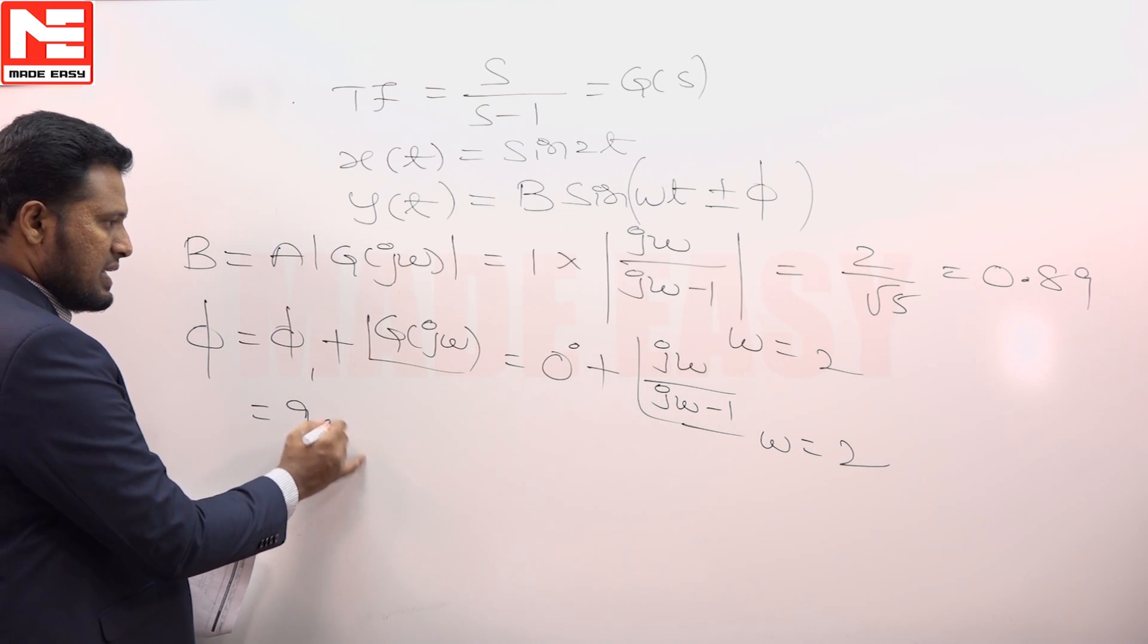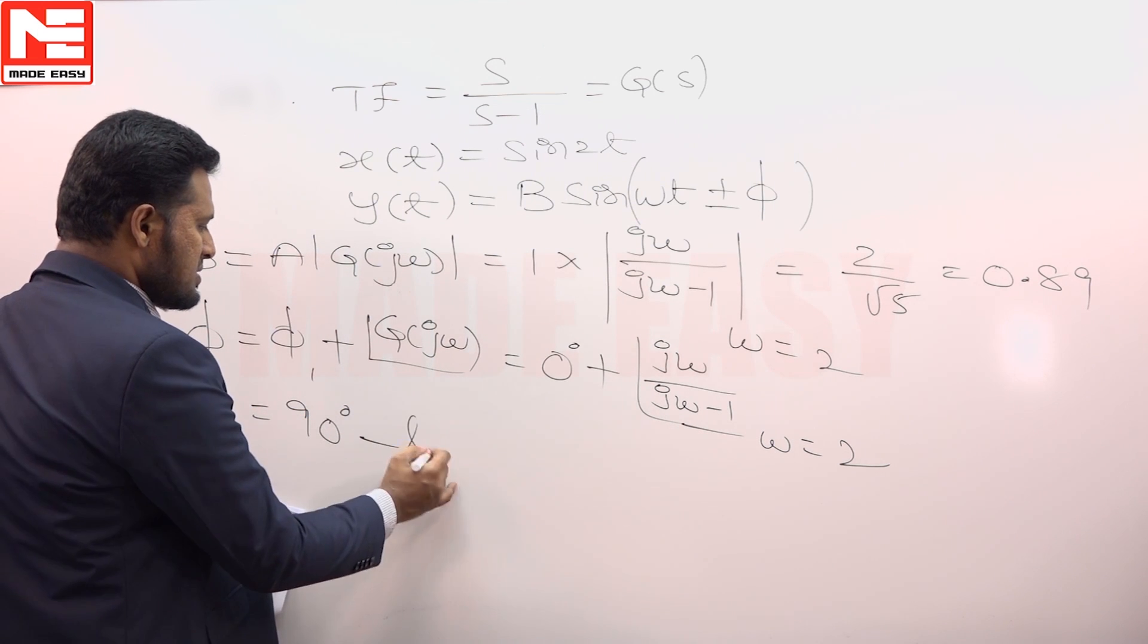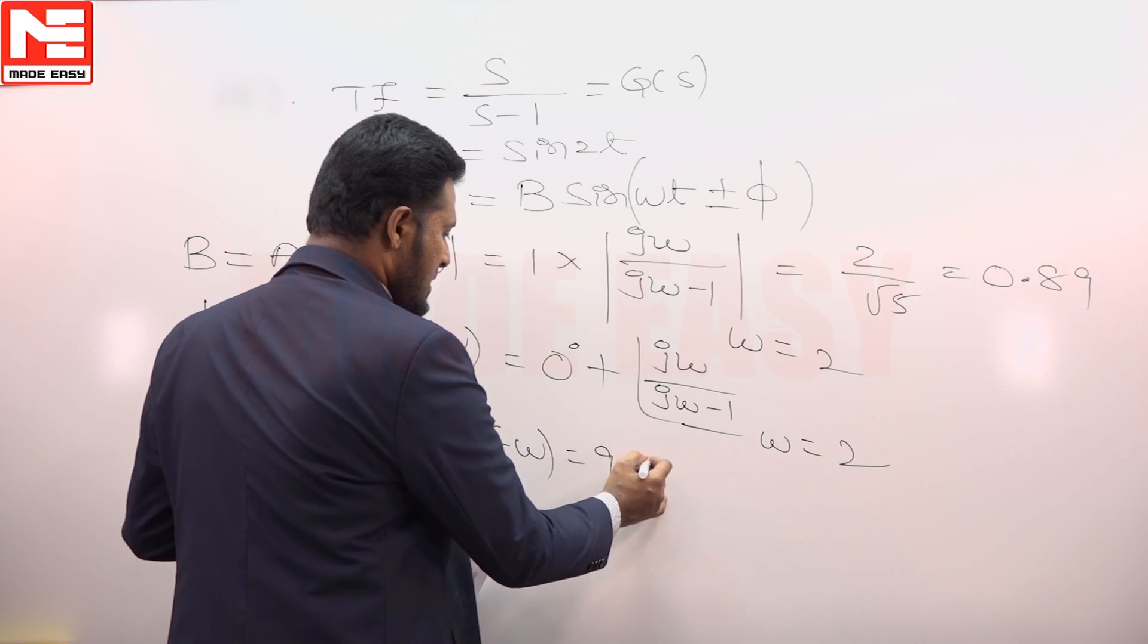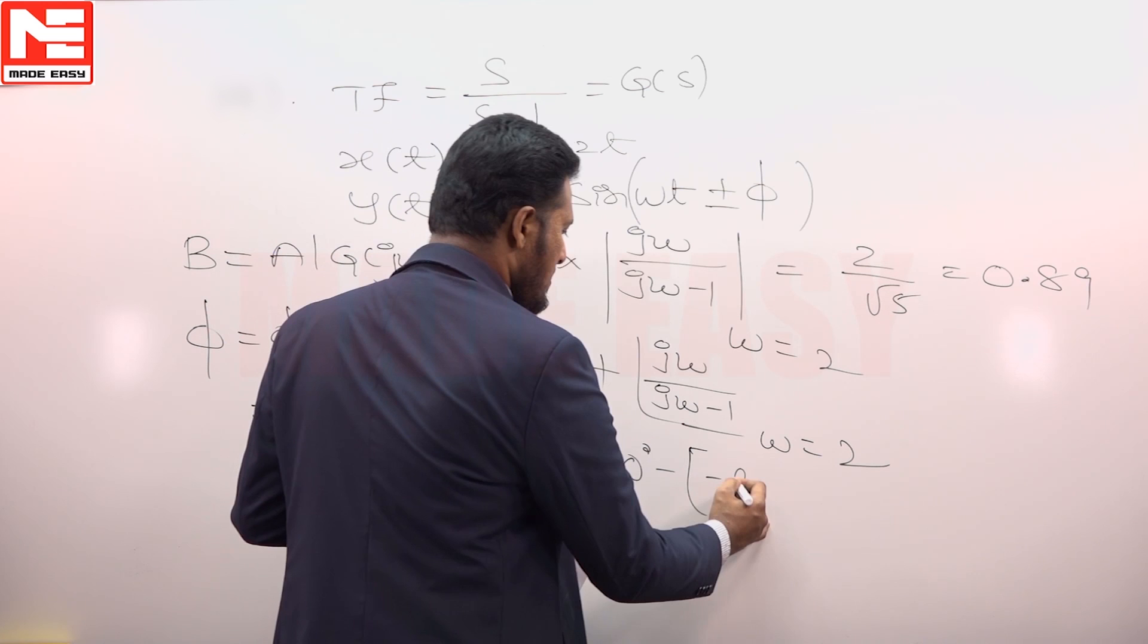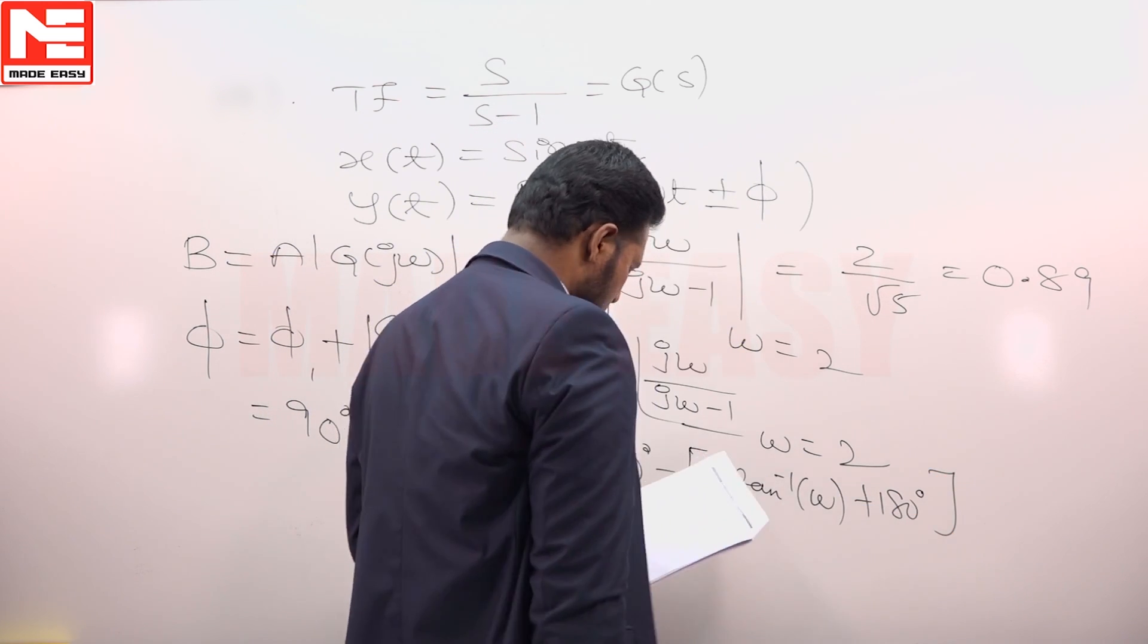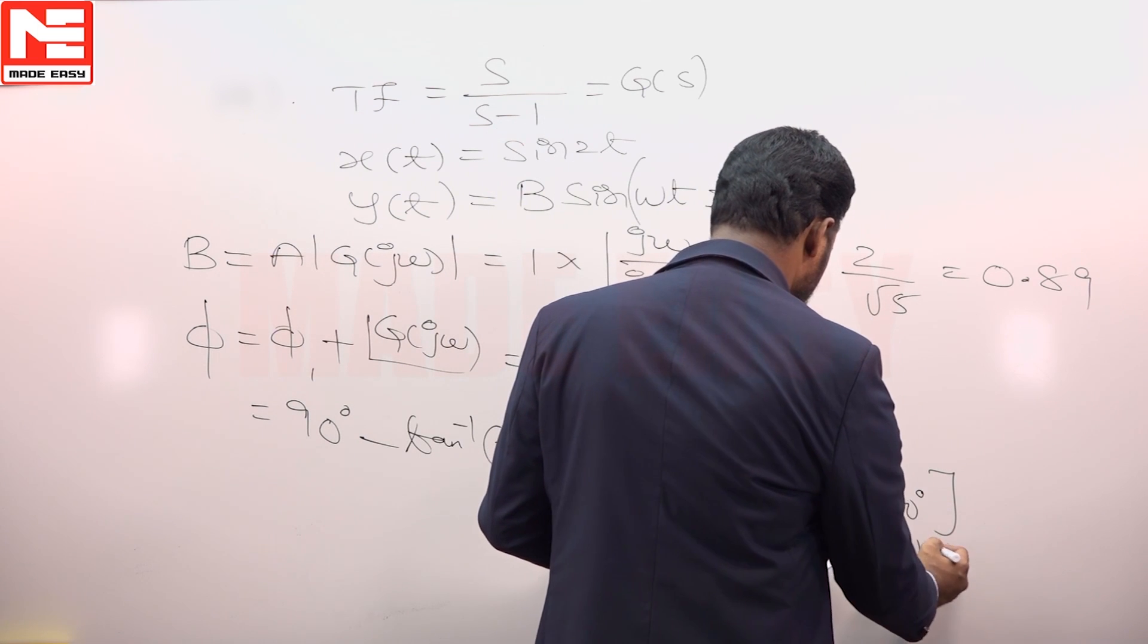This becomes 90° minus tan inverse of -ω, which is 90° minus (-tan inverse ω + 180°), for the value of ω equal to 2.